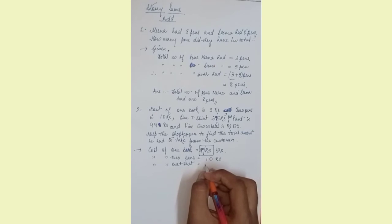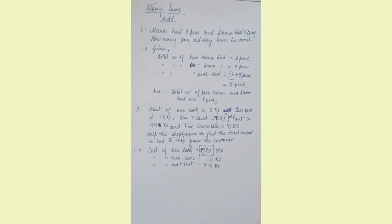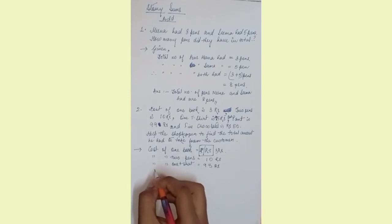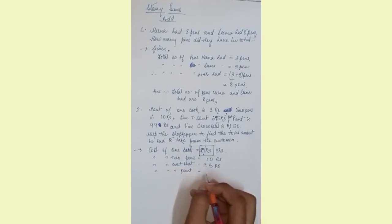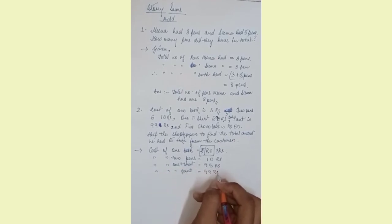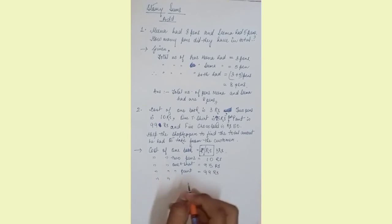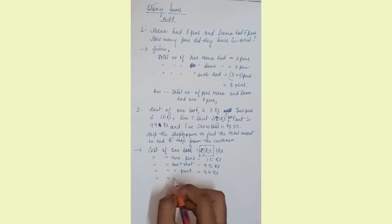Cost of two pens is equal to ten rupees. Cost of one t-shirt is equal to 95 rupees. Usually we don't get normal t-shirt at 95 rupees, but we are assuming that.